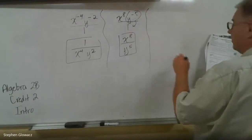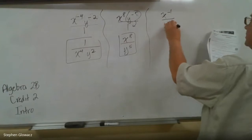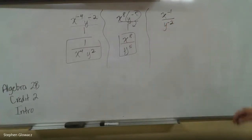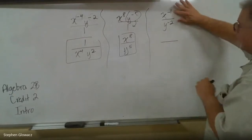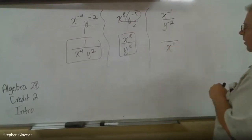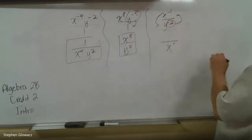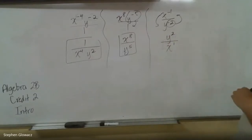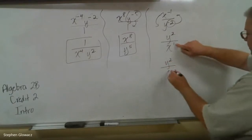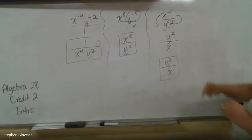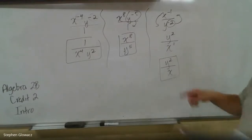Number 3: we've got x to the negative 1 over y to the negative 2. Same principle — the x on top has a negative exponent, so it drops to the bottom and becomes x to the positive 1. The y is on the bottom with a negative exponent, so it comes to the top and becomes y to the positive 2nd. That gives us y squared over x. When the exponent is positive 1, we generally don't write the 1, so just y squared over x.